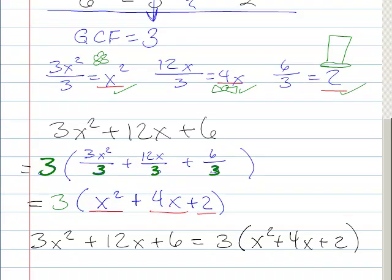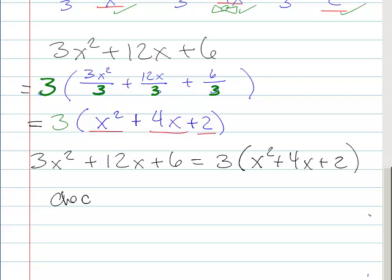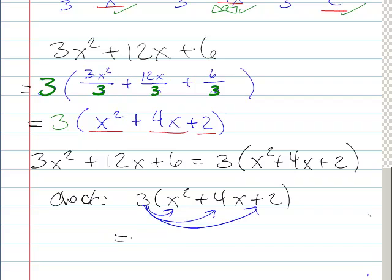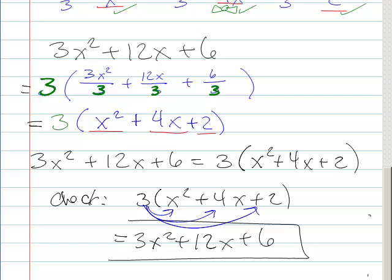Now if you want to check it, you can by distributing that 3 back through there. You should get the exact same thing. And we've got 3 times x squared is 3x squared, 3 times 4x is 12x, and 3 times 2 is 6. And this is the same thing as this. So that's awesome. And that means that we did it right.